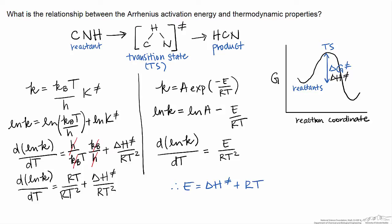It turns out that the activation energy is generally very close in value to the enthalpy difference between the reactants and the transition state. That's because RT, for most reactions of interest conducted at room temperature to about 500 Kelvin, has a value of approximately 1 kcal/mol. Whereas a typical enthalpy change to a transition state is usually in the range of 10 to 35 kcal/mol. Therefore RT is a relatively small fraction of the activation energy, and the majority is determined by the enthalpy change to the transition state. So we can compute the enthalpy change to the transition state and that essentially tells us the activation energy right away, with a small correction of RT if we want to be more accurate.